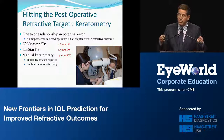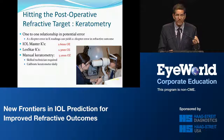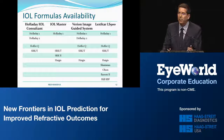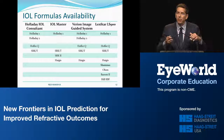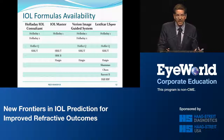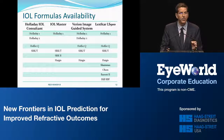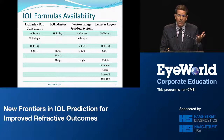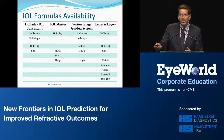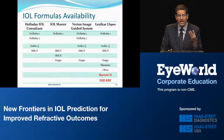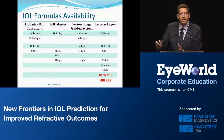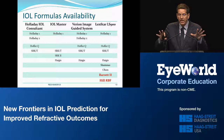All the different IOL formulas are available. If you're still getting the A constant off the box for your SRK, make a note to stop immediately. Many have been perfectly happy with Holladay 1 and 2 — they've been good workhorses. But I ask you to look toward Olsen, Barrett, and Hill RBF formulas. That's where we need to be transitioning. You can still look at what you're using now, but start looking at Barrett and Hill RBF side by side so you can start transitioning.